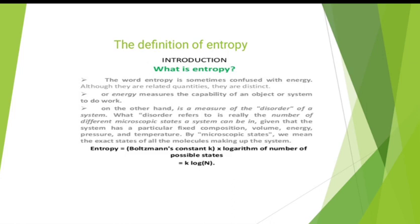Energy measures the capability of an object or system to do work. Entropy, on the other hand, is a measure of the disorder of a system. Disorder refers to the number of different microscopic states a system can be in — meaning the exact states of all the molecules making up the system.